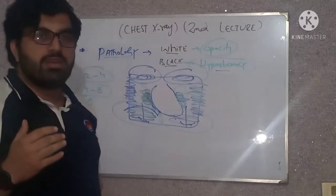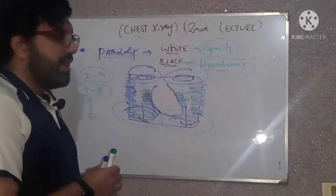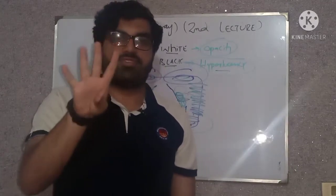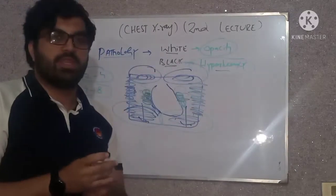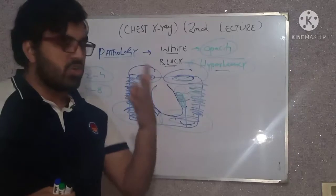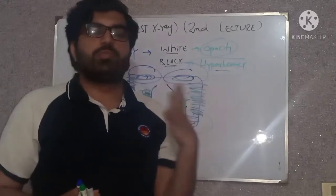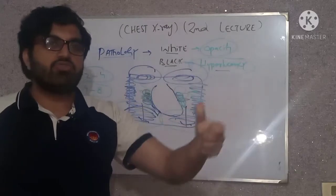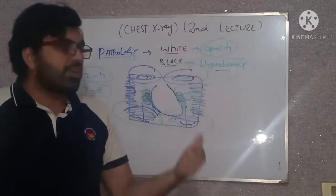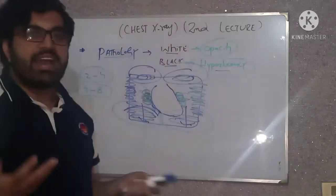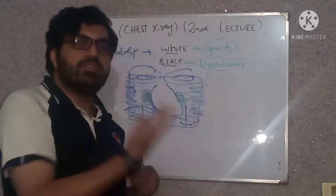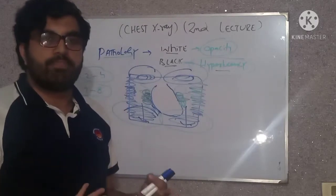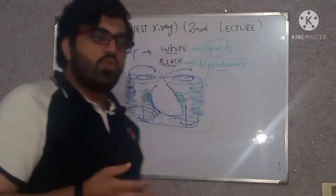Today is the second lecture regarding the X-ray. In the first lecture we talked about the preliminaries — we must know about four things before going into the actual pathology of X-ray. These four things were: rotation, inspiration, penetration, and exposure. If an X-ray fulfills all these four criteria, then the next thing is to find out and describe the pathology. What we usually do is directly go toward the pathology without applying the X-ray quality criteria.